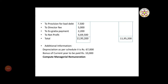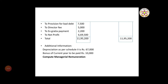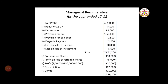Additional information given: depreciation as per Schedule II is 67,000 and bonus of current year to be paid is 10,000. Compute managerial remuneration. This is the format to compute managerial remuneration for the year ended 17-18.